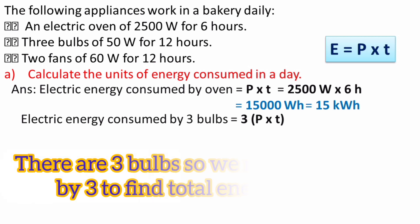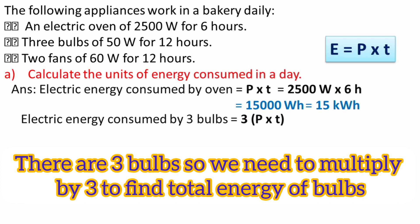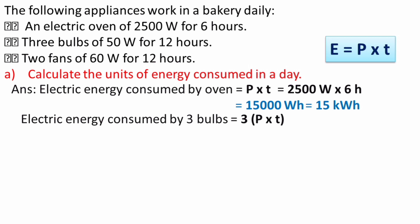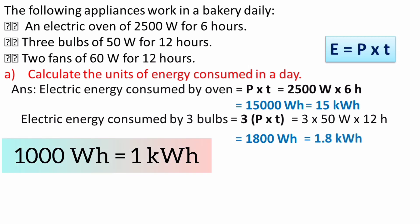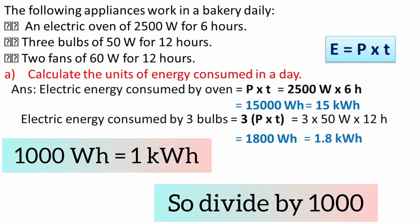Now let's find the energy consumed by 3 bulbs. Since there are 3 bulbs, the formula becomes 3 × P × T. Substituting the values: 3 × 50 × 12 = 1800 watt hour. Converting to kilowatt hour gives 1.8 kilowatt hour, because 1000 watt hour equals 1 kilowatt hour, so divide by 1000.